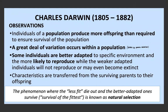Some of Darwin's key observations are important to know. He said that individuals of a population produce more offspring than required to ensure survival, so not all offspring will live to sexual maturity. He also said there is a great deal of variation within a population, driven by genetic variation, mutations, crossing over, and so on — and there has to be variation for natural selection to occur. Darwin also said that some individuals are better adapted to specific environments and therefore more likely to reproduce, while those less adapted may not reproduce and may become extinct. Characteristics are then transferred from surviving parents to offspring — this phenomenon where the less adapted die out and the better adapted survive is what we call natural selection, also known as survival of the fittest.